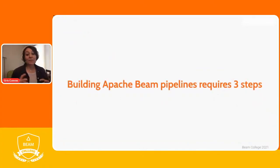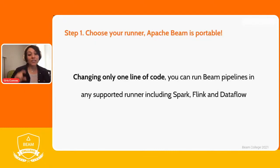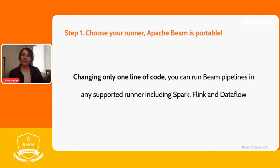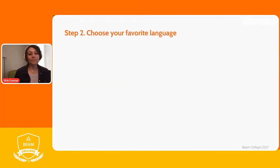Building Apache Beam pipelines requires three steps, giving you an overview of its value proposition. The first is that Apache Beam pipelines are portable — you can change only one line of code and run your pipelines in any supported runner, including Apache Spark, Apache Flink, or Google Dataflow. This is where the misconception is cleared up: Apache Beam is not a substitute for Spark or Flink; if you develop pipelines with Beam, you can actually run them using Spark or Flink.